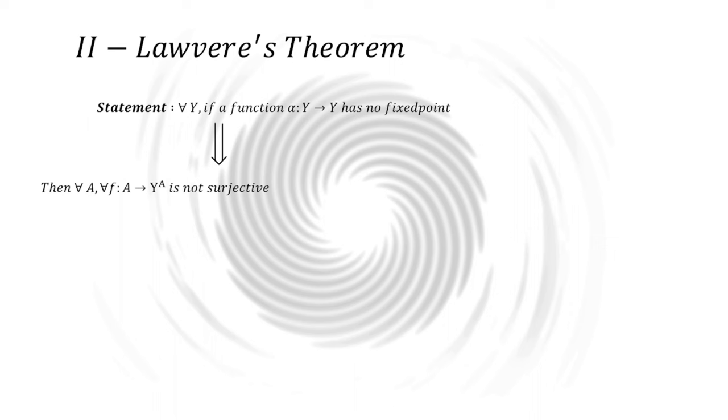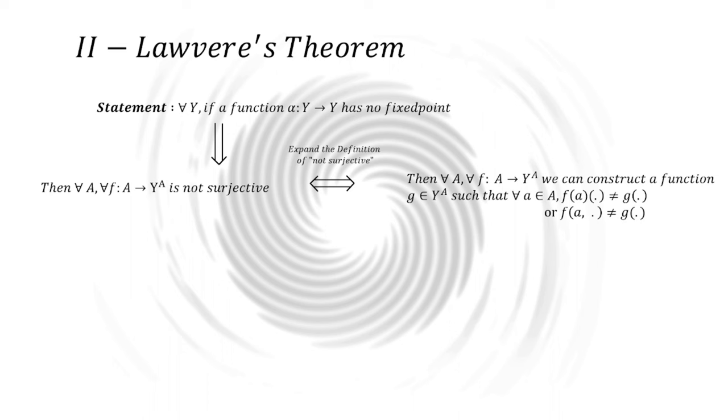But first, let's rewrite it in an equivalent way to ease the proof. We rewrite the statement by expanding the definition of non-surjectivity. It gives, for all A and F, we can always construct a function G from Y to A, such that for all a in capital A, F of a is always different from the function G. As a reminder, our function F is a function of one variable that returns a function of another variable that returns a value of Y. And this is equivalent with a function of two variables that returns a value of Y. And it is more simple. This is called currying.